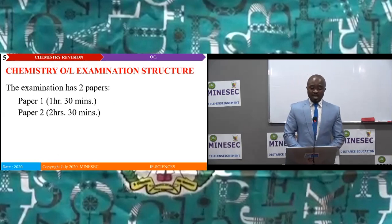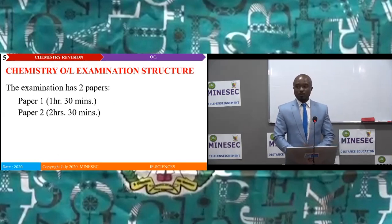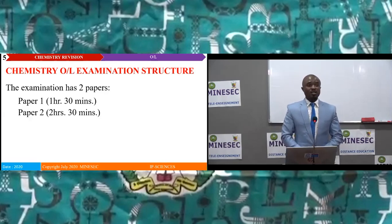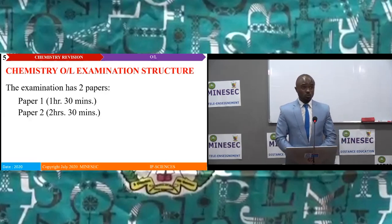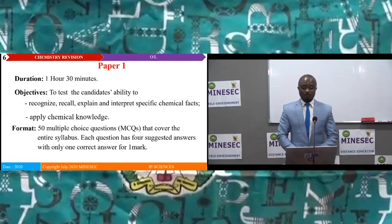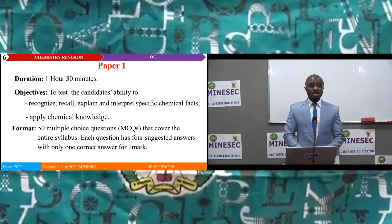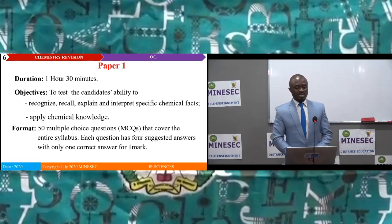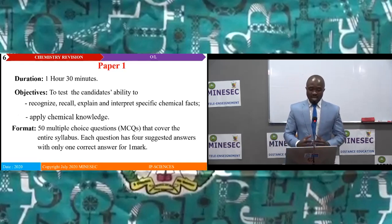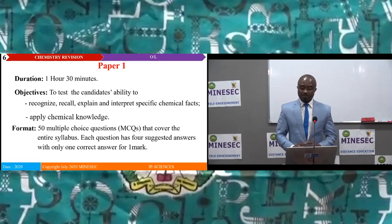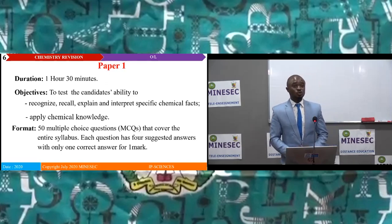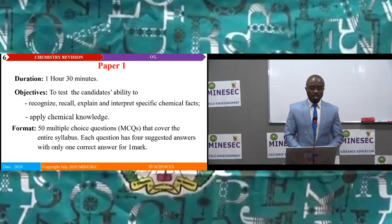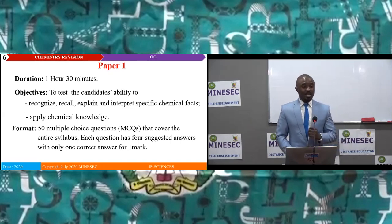The Chemistry Ordinary Level Examination has two papers. Paper one is one hour 30 minutes. Paper two is two hours 30 minutes. Paper one has the objective to test the candidate's ability to recognize, recall, explain and interpret specific chemical facts and to apply chemical knowledge. This paper has 50 multiple choice questions covering the entire syllabus.